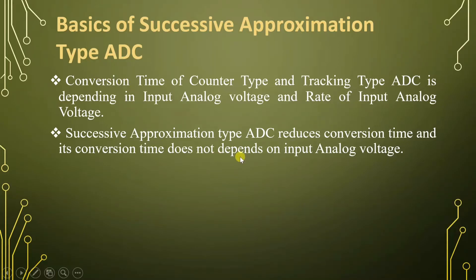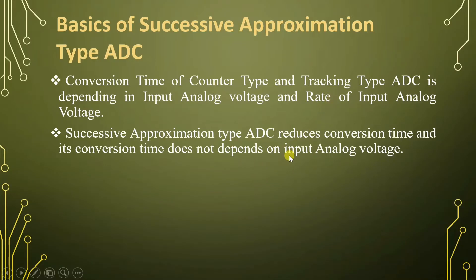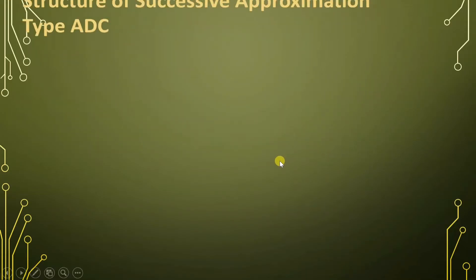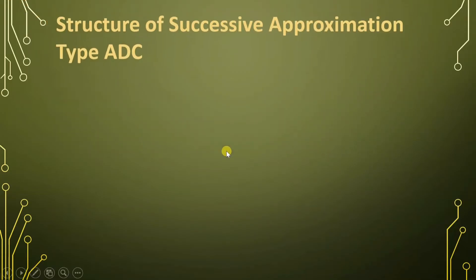One more major advantage of successive approximation type ADC is that its conversion time period is lesser than that of counter type ADC and tracking type ADC. So let us see how the conversion time period does not depend on input analog voltage and how it is better compared to counter type and tracking type ADC by looking at the structure of successive approximation type ADC.